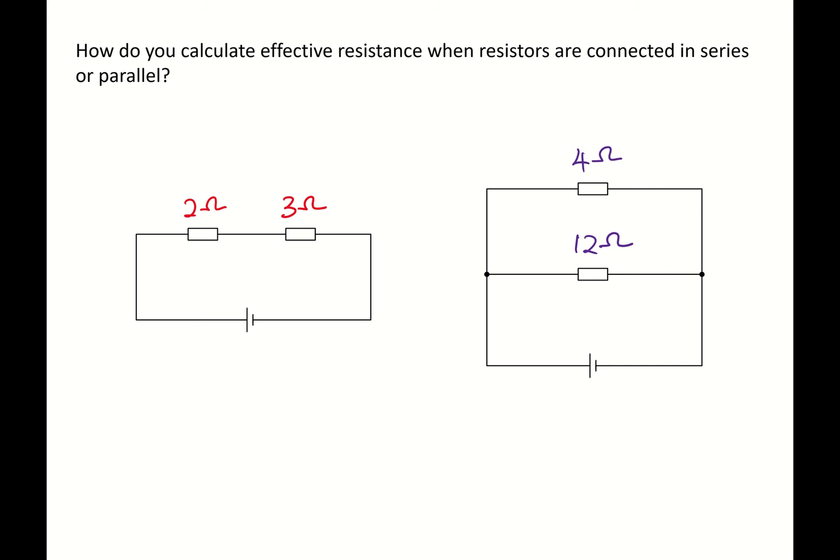So on the circuit on the left, current flows from the battery through the 2 ohm resistor, through the 3 ohm resistor and then back to the battery. Now when you look at the whole path, you realize that the current flow is only one path.